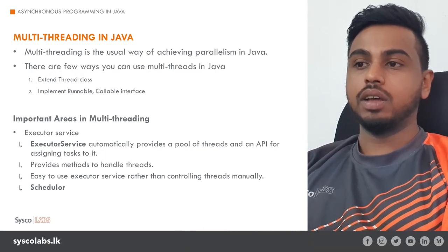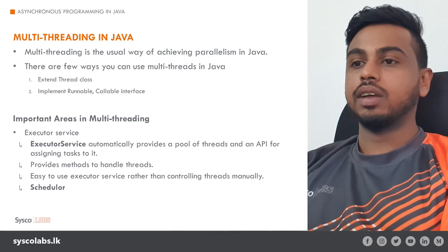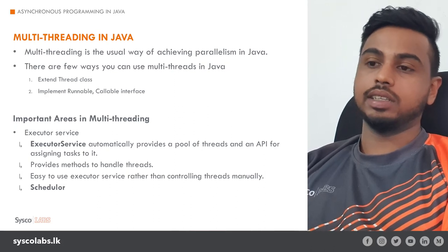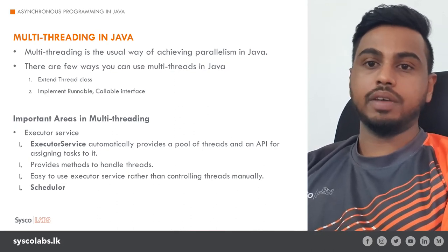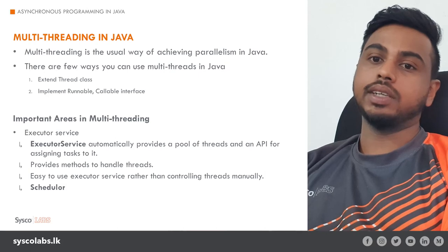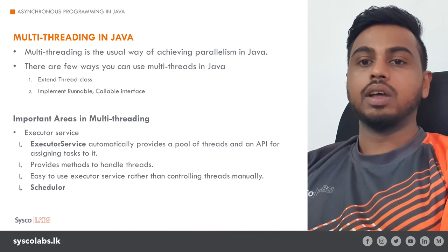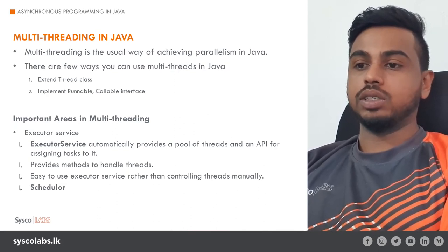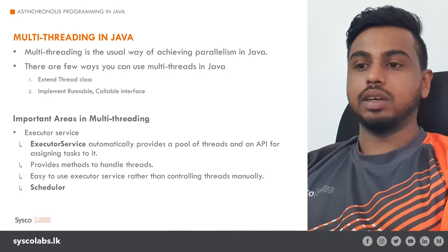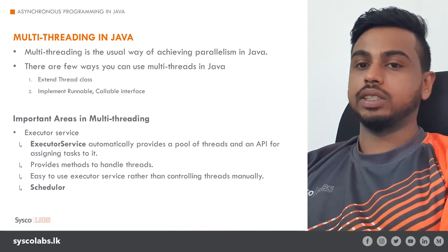Now let's talk about multi-threading in Java. Today I'm not going to explain the basics — just a refresher. There are a few ways to achieve multi-threading in Java: extending the Thread class, implementing the Runnable interface, and the Callable interface. I also want to highlight the ExecutorService. If we create threads manually, it may lead to resource wastage and inefficient code. Using ExecutorService, it offers thread pools and we can submit runnable tasks into it, and it will manage threads and run those tasks efficiently.